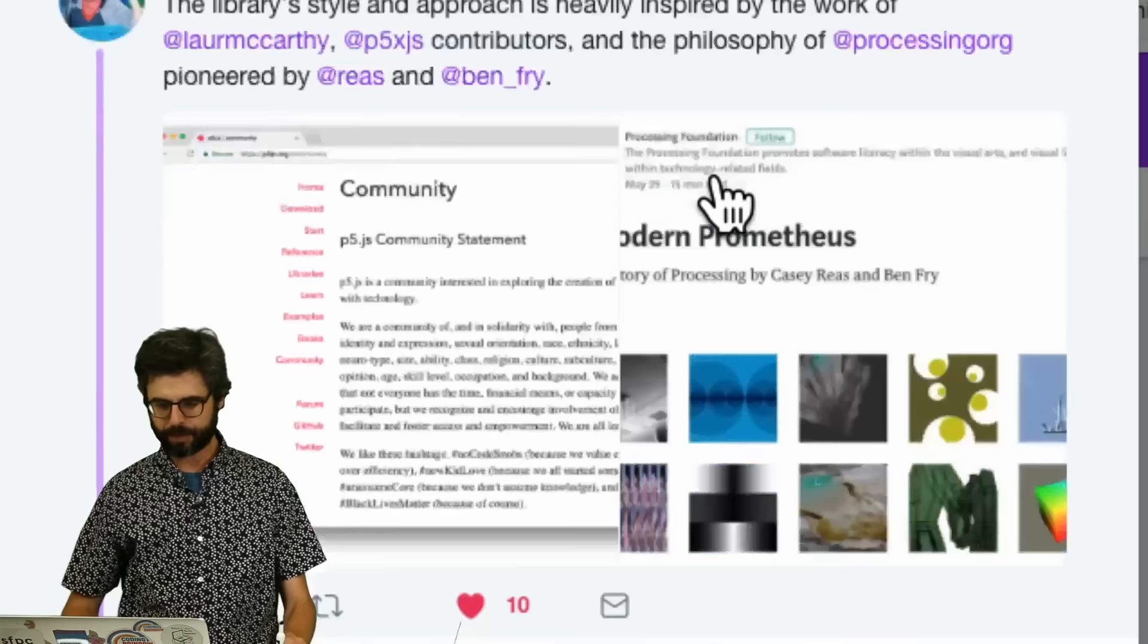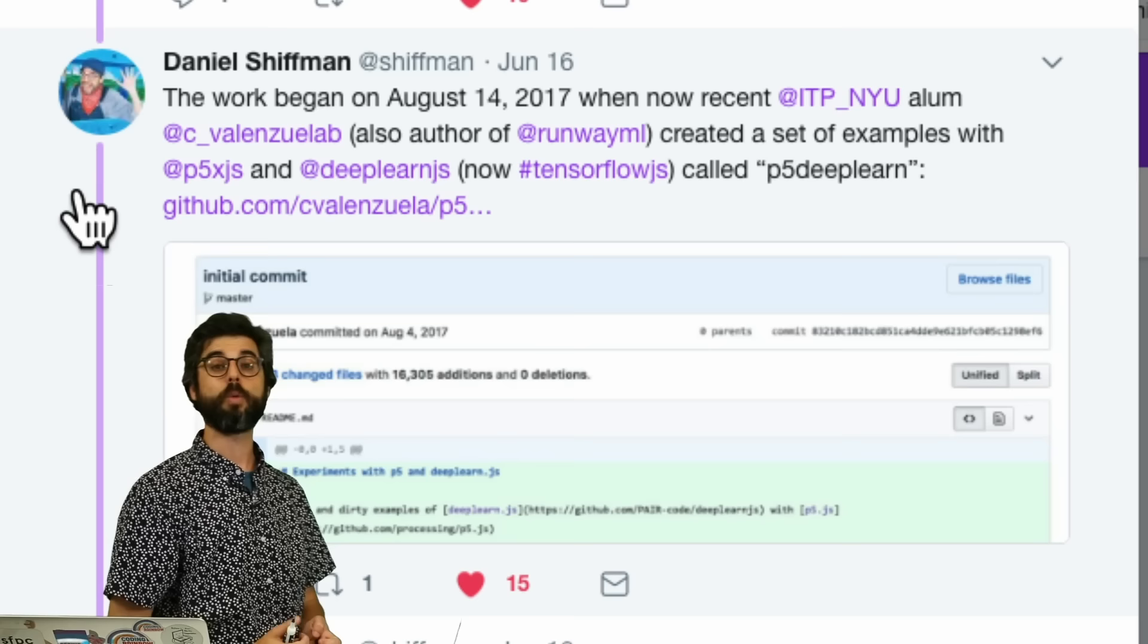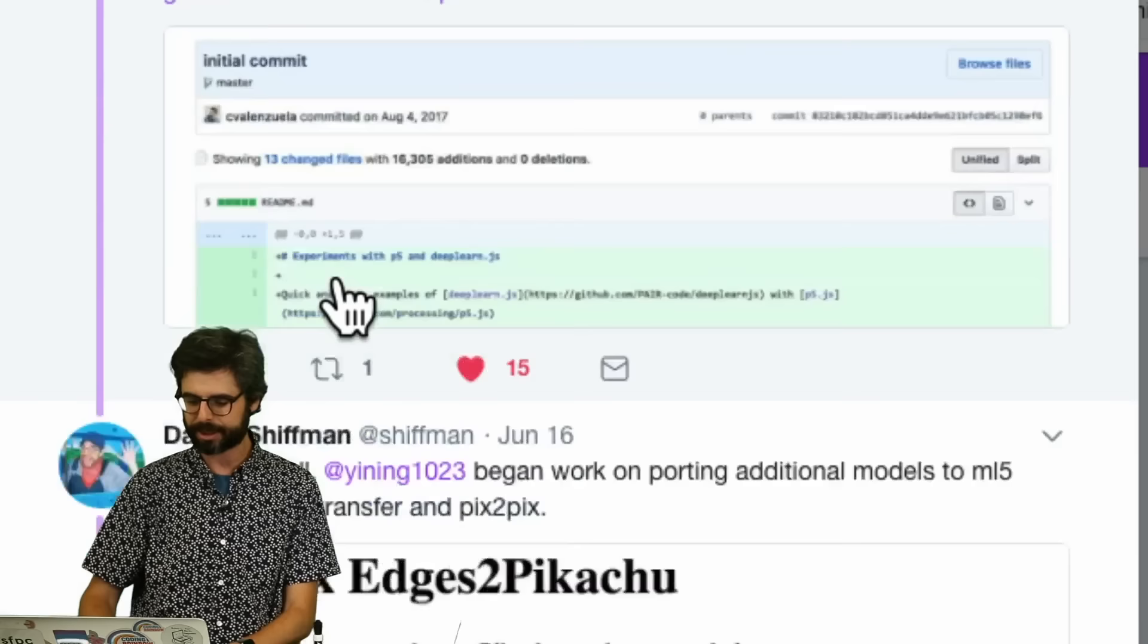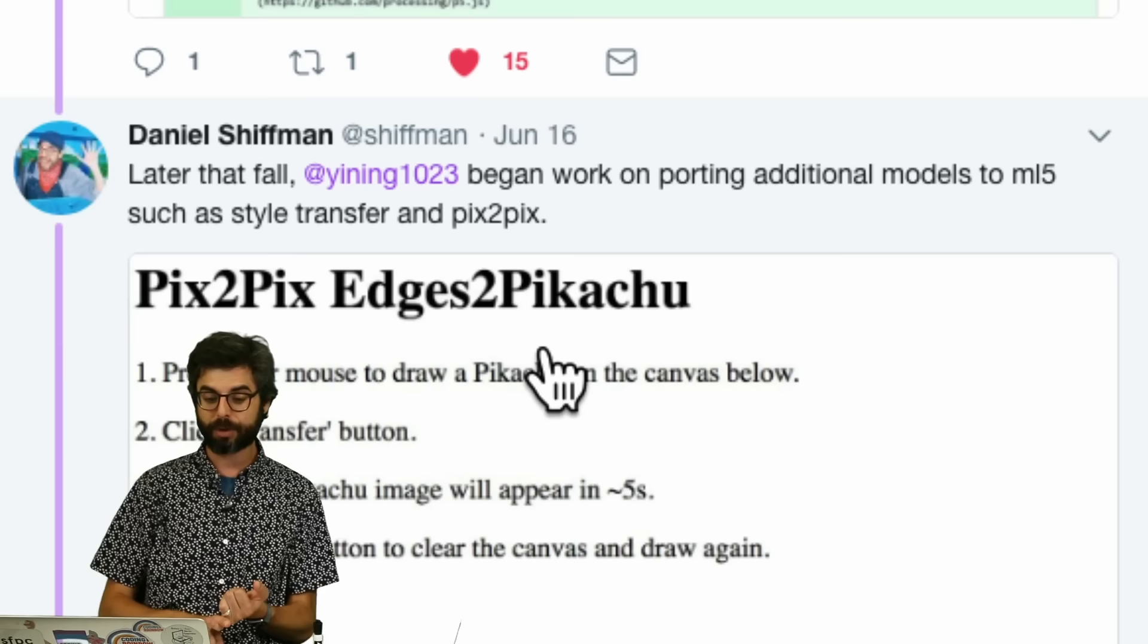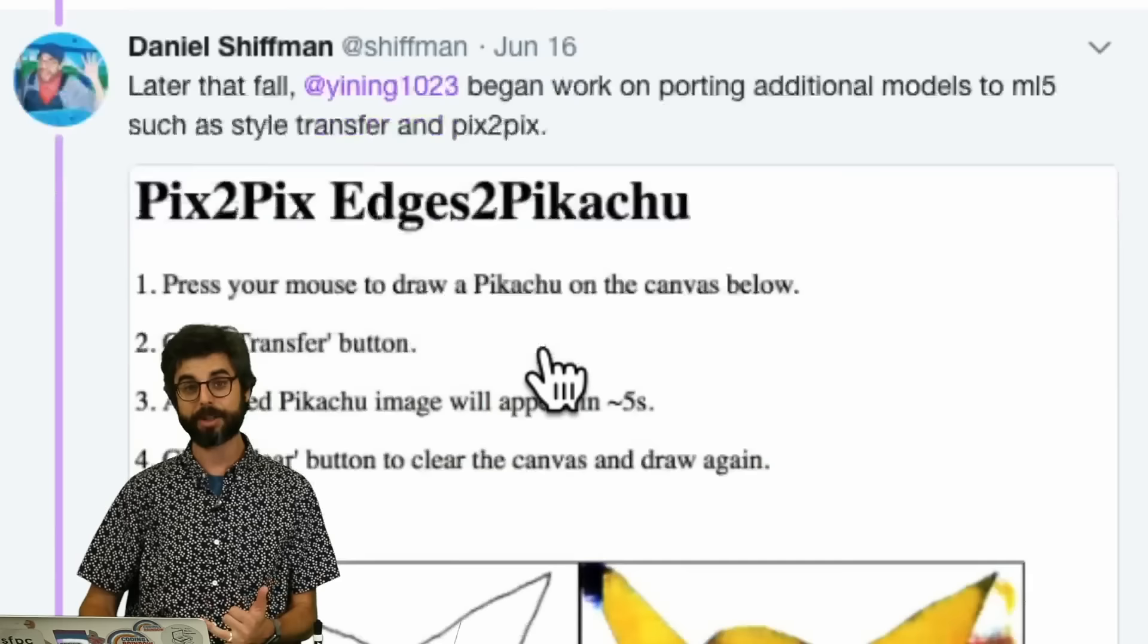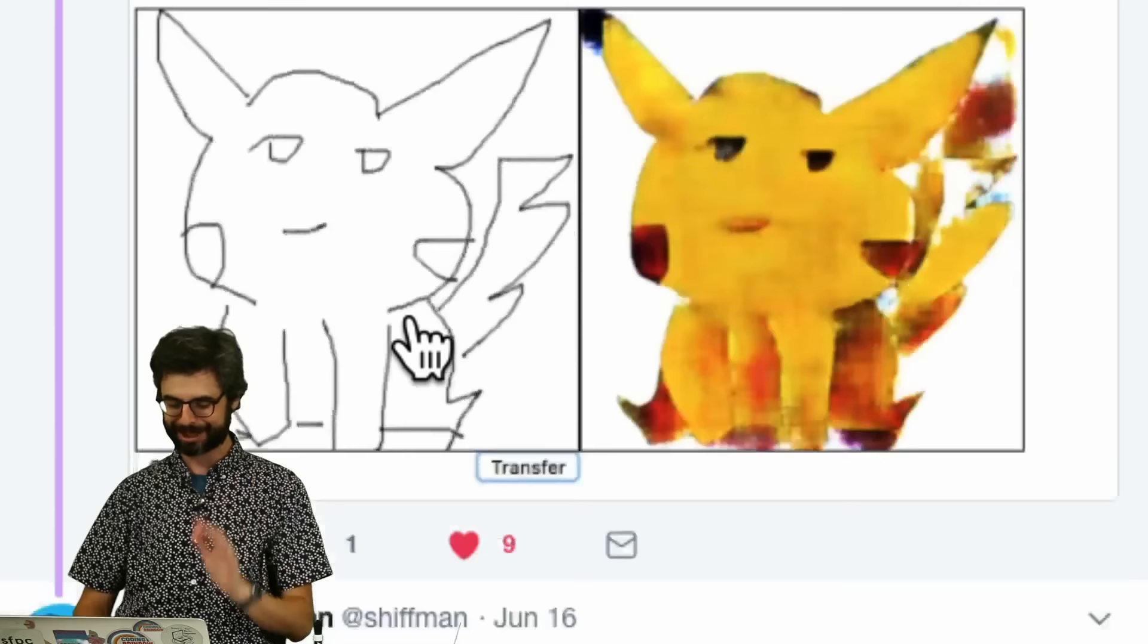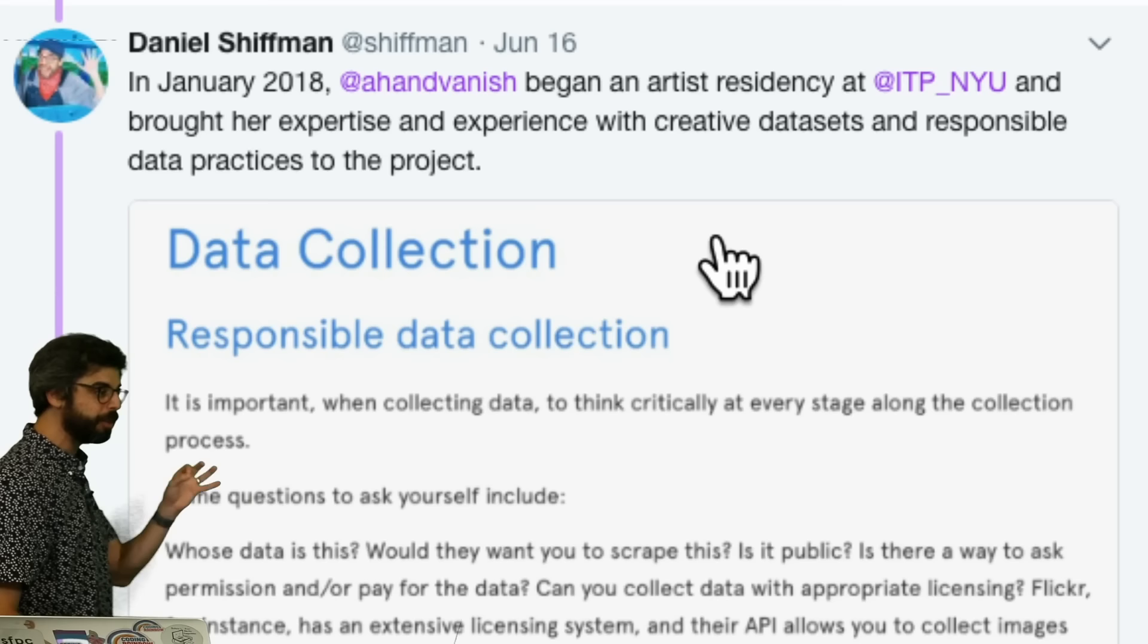Which actually can take an image and estimate your pose, meaning where are your hands, where are your shoulders, where are your eyes, where are your hips? I might be getting that somewhat wrong there, but that's a pre-trained model, just like a pre-trained model learns how to classify the content of an image. Here's a pre-trained model that looks how to figure out where the human body is in a particular image. So we'll be looking at those. I encourage you to, like, sort of click around here.